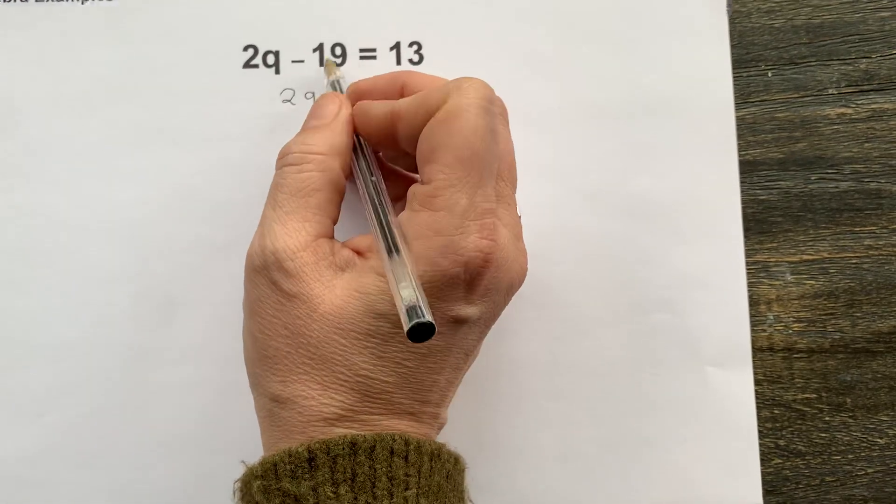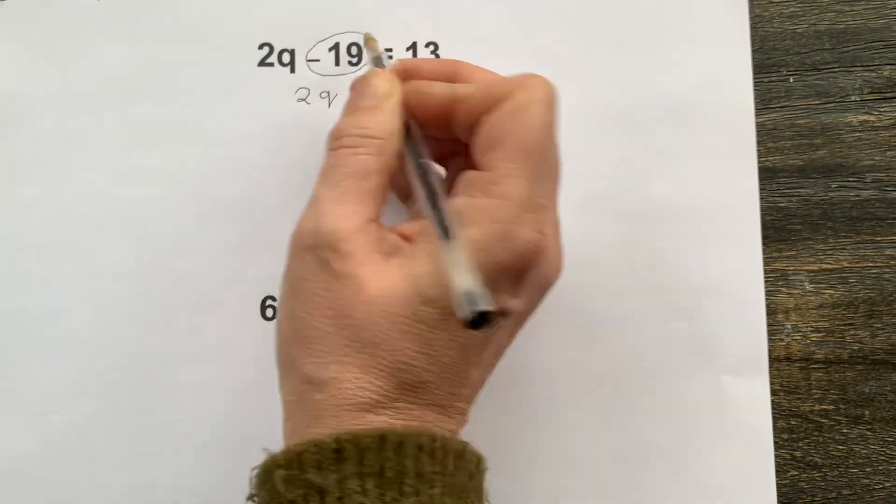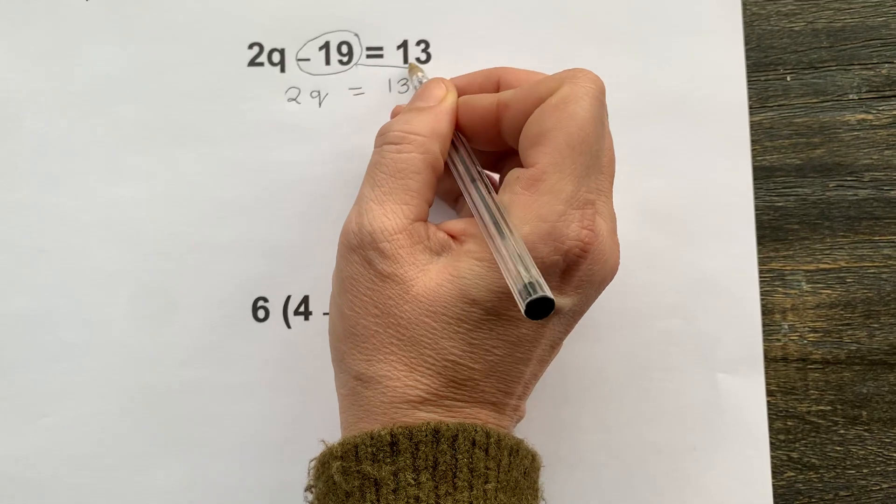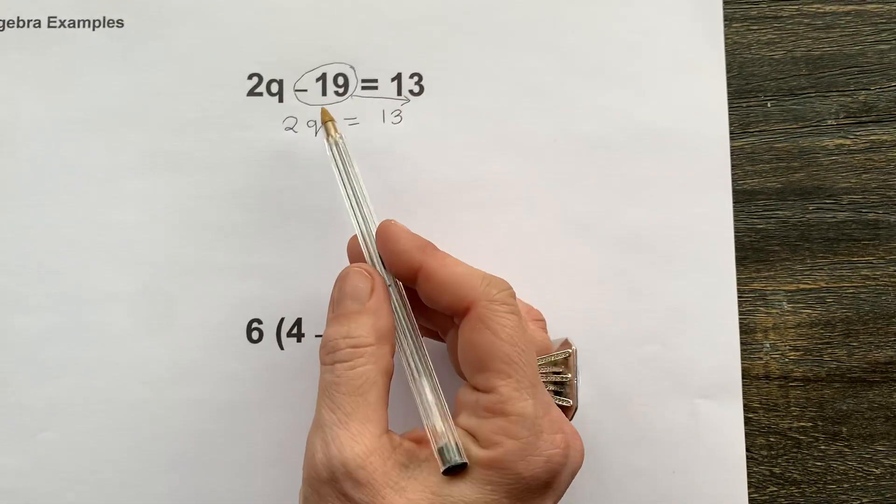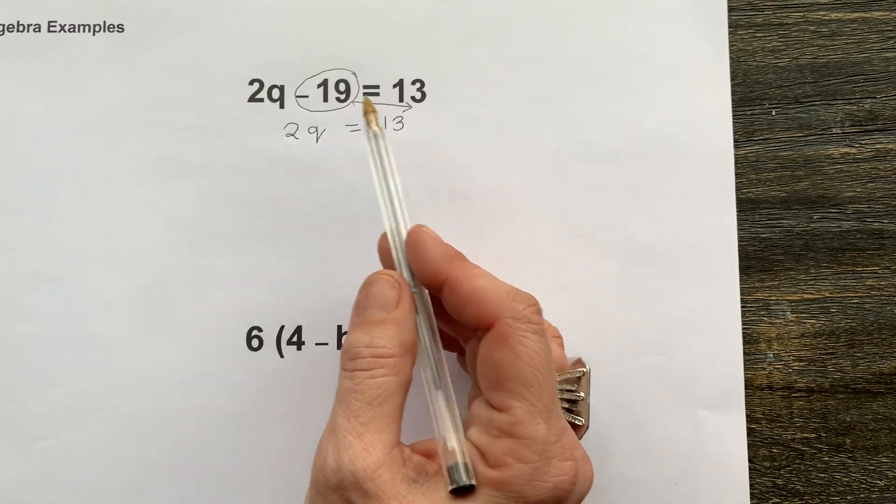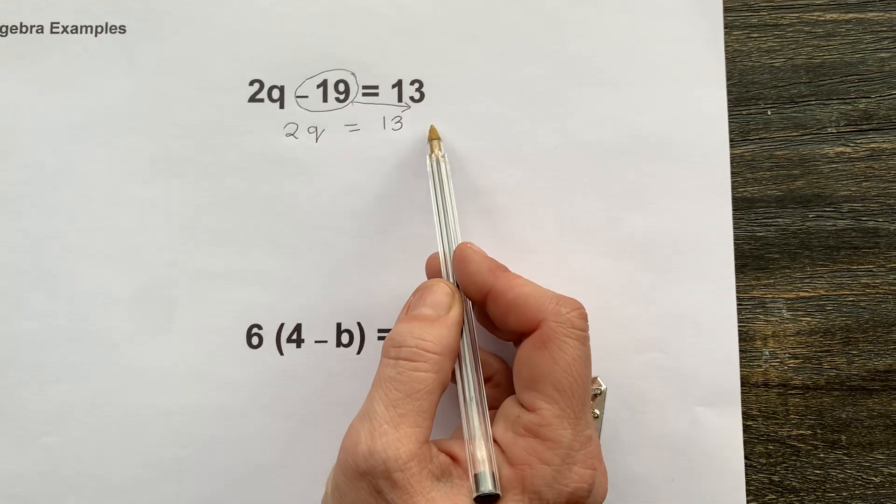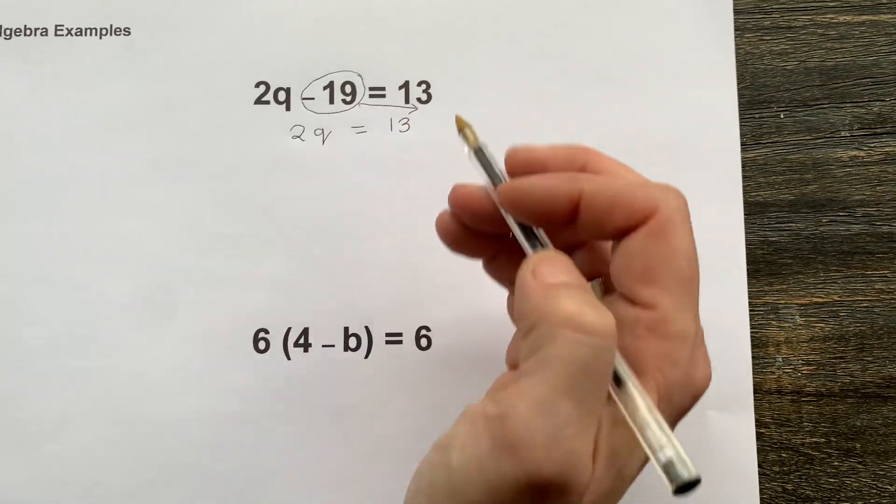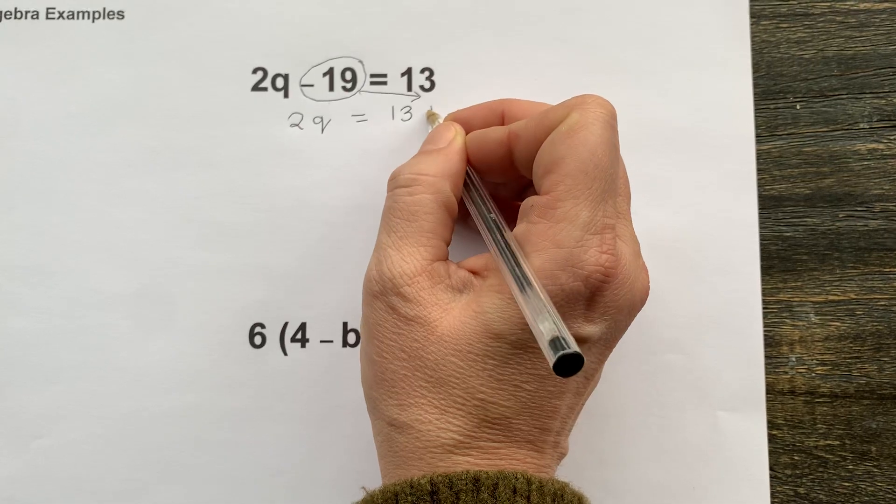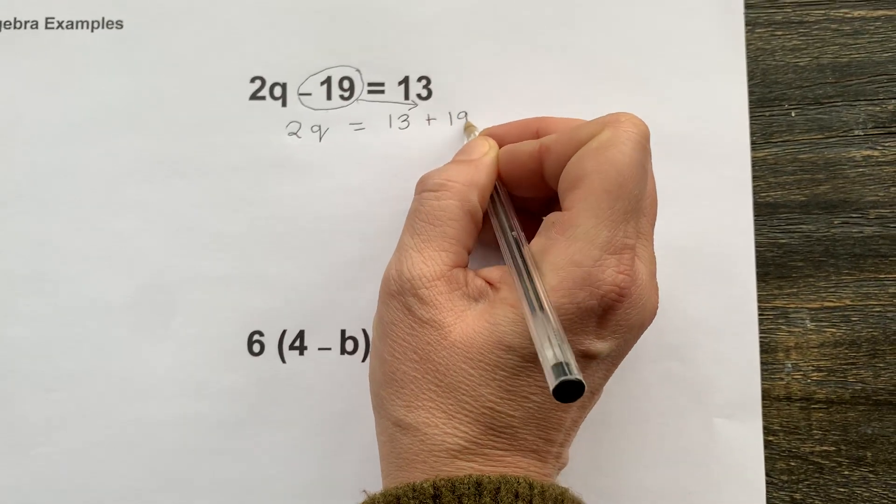I'm going to move minus 19 across to join the 13. Now when a number moves across the equal sign, it has to do the opposite on the other side. So the opposite of minus 19 would be plus 19.